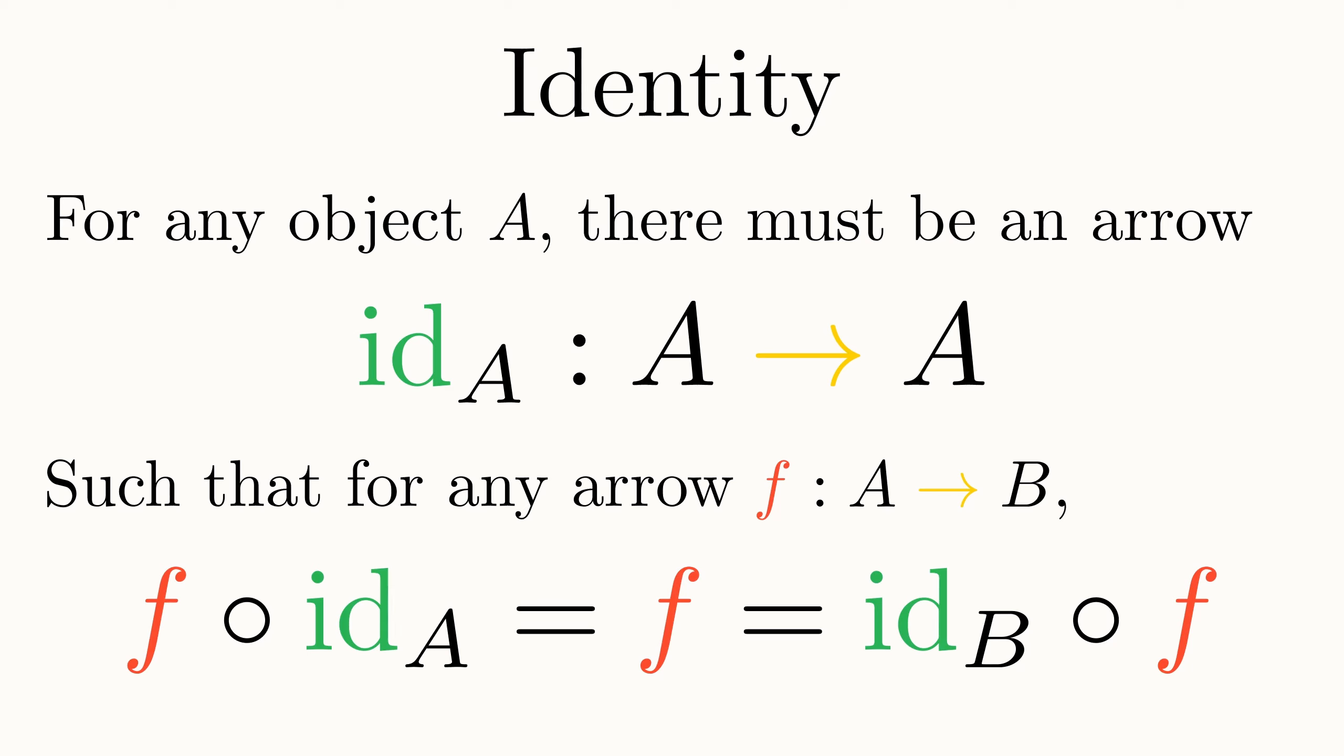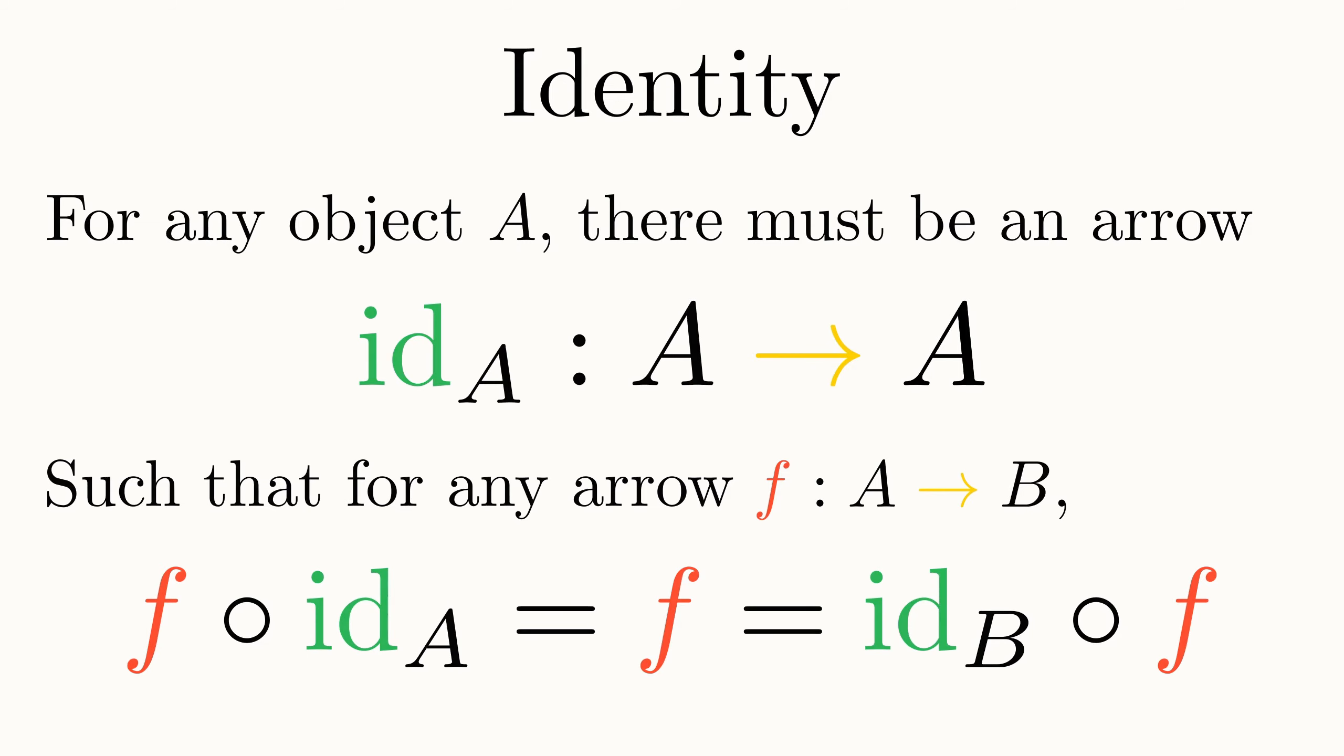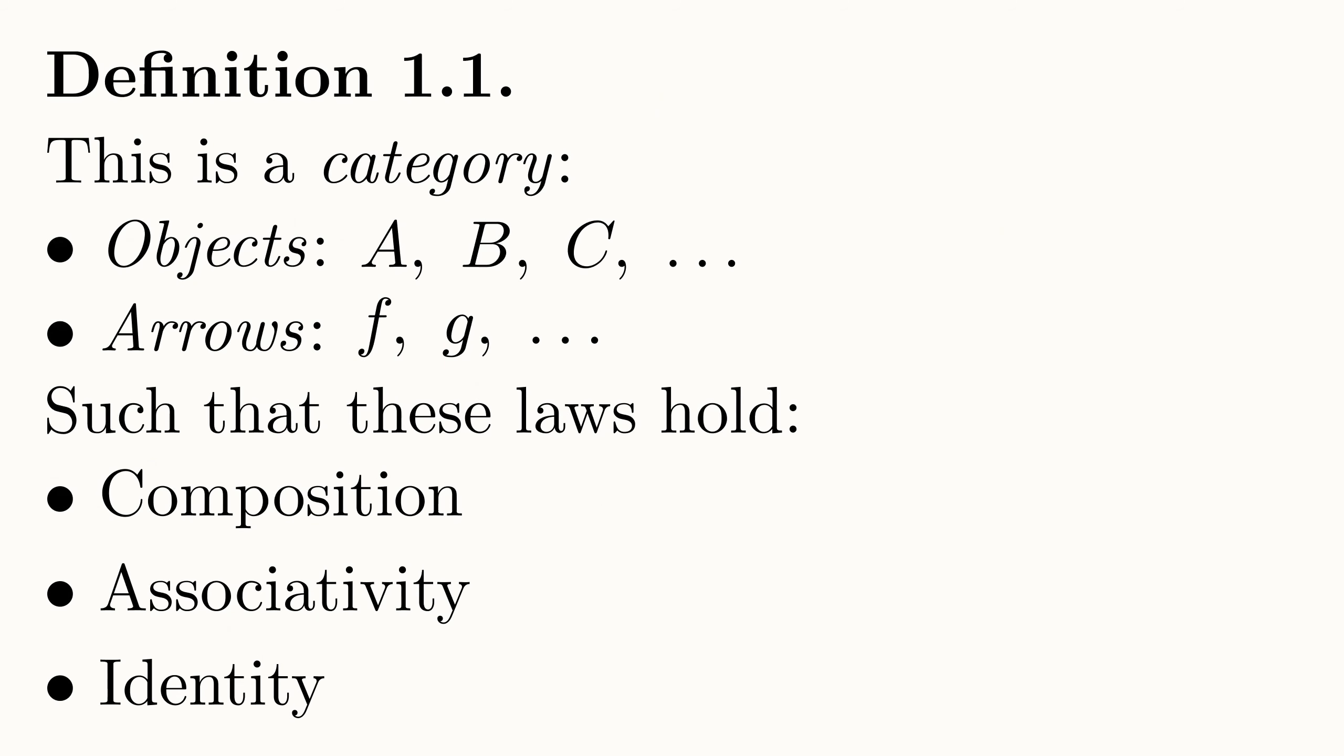It's important to notice the order of composition here. We can't compose the identity arrow of A on the left, as then there would no longer be a common middle object, and so their composition wouldn't be defined.